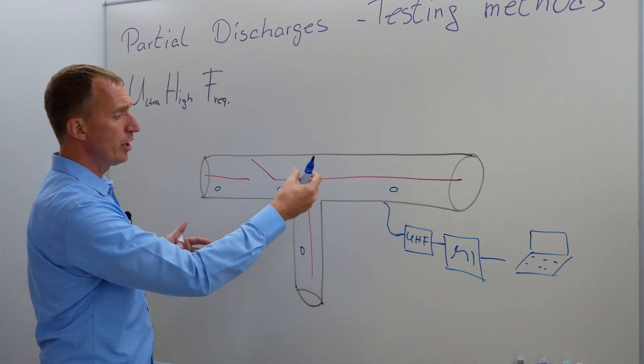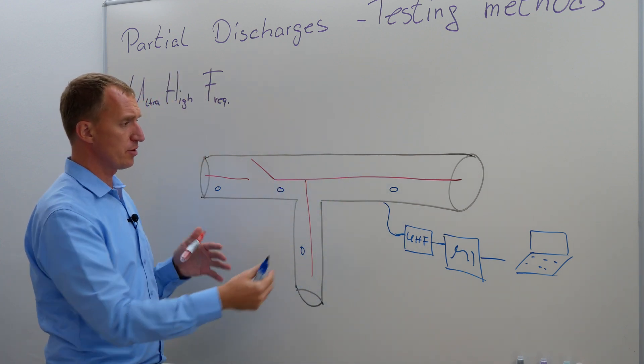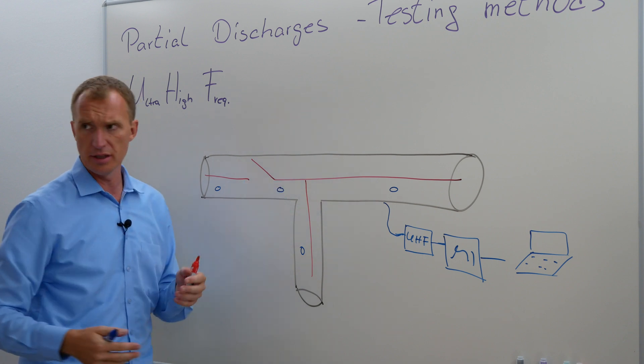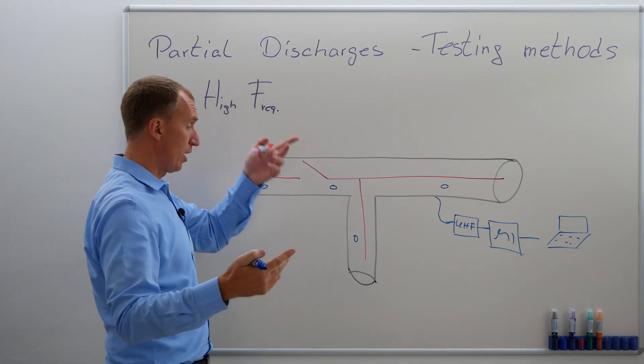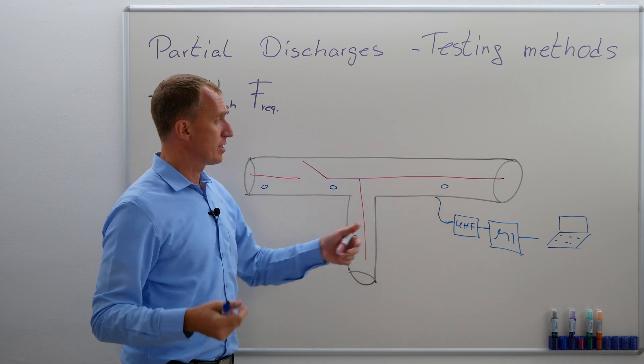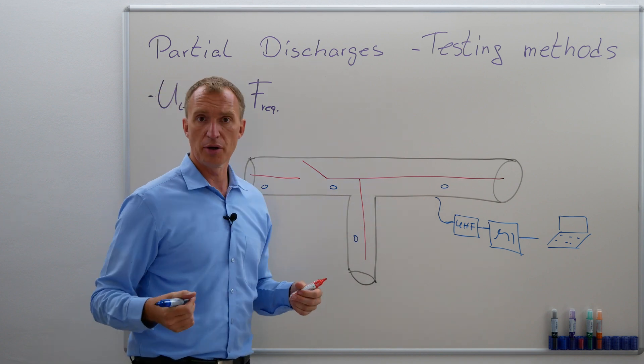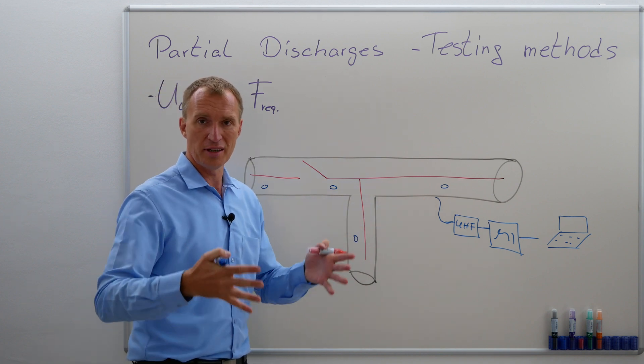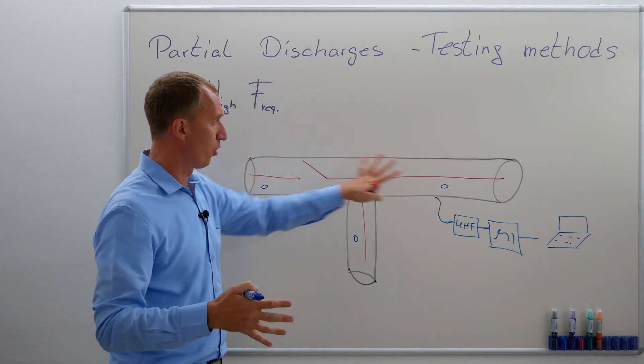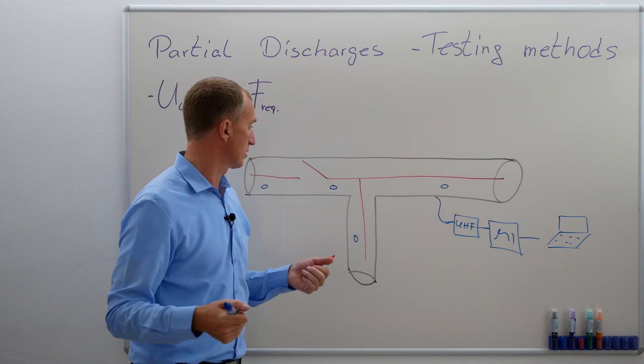Now, you can use UHF sensors in order to measure partial discharges, and here, once again, it's a different kind of frequency set, it's ultra-high frequency, and this allows you to have an idea about the GIS. You're literally using the case that it's already a shielded room, and it's kind of advantageous. There is a little bit of a downside.